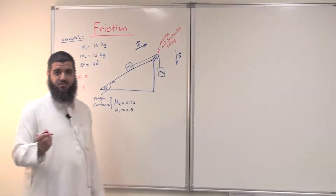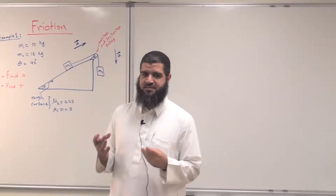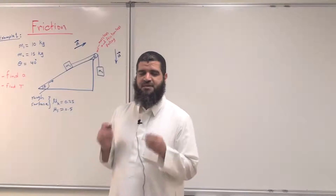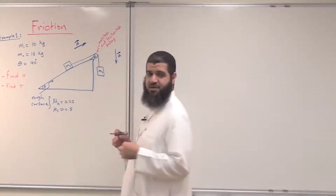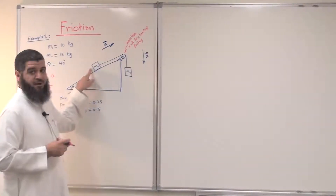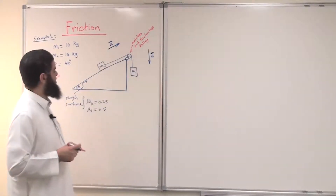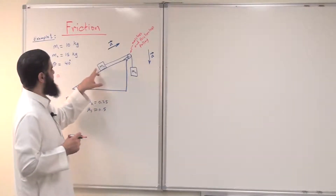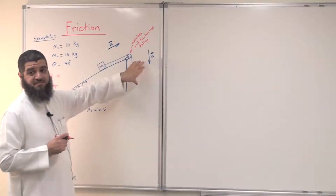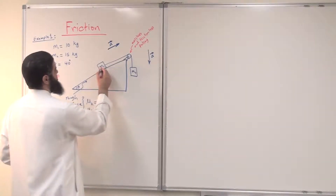Let us start. The first step is always to draw the free body diagram — this is always the starting point in solving such problems. I have two objects: m1 and m2. The pulley is massless so we will not focus on it. I have to draw the forces along with the acceleration of each object.